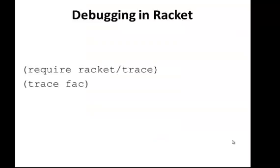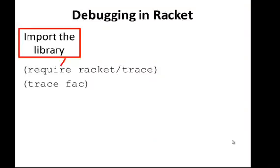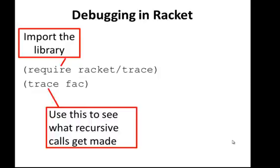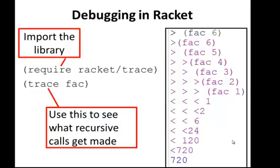For debugging, we use this library, racket slash trace. We called an example trace on the fac function. So we called trace with a procedure name. And what it did is anytime we called that function, it showed us exactly the inputs to each of the functions that was called.